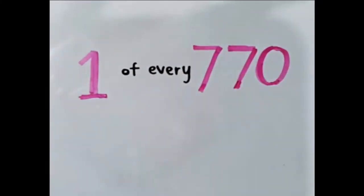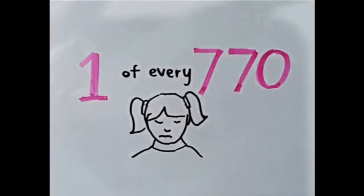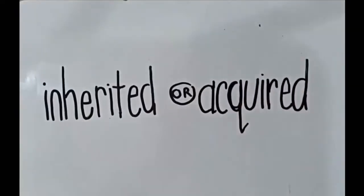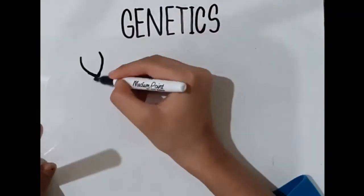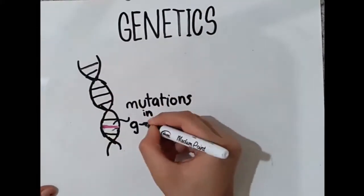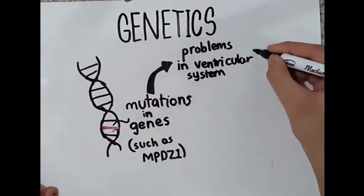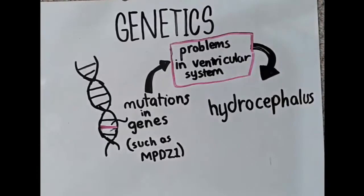Hydrocephalus is either inherited at birth or acquired. So let's talk about some of the specific causes of hydrocephalus. First, it is important to note that genetics can be a huge factor in development of hydrocephalus. Mutations in certain genes can result in problems in the ventricular system that result in hydrocephalus. So what exactly could go wrong?